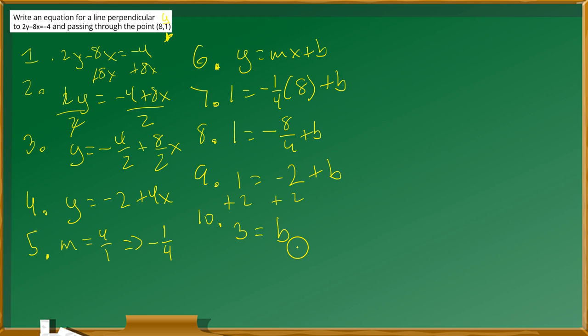Now that you have the value of b at the last stage, you can put all of this together. And you can simply write the following: y equals, you put the value of m as found, so that's negative 1 fourth. You put x, and you add the value of b as found, which is 3. And now this equation right here represents the line that is perpendicular to the equation given right here. And that's it.